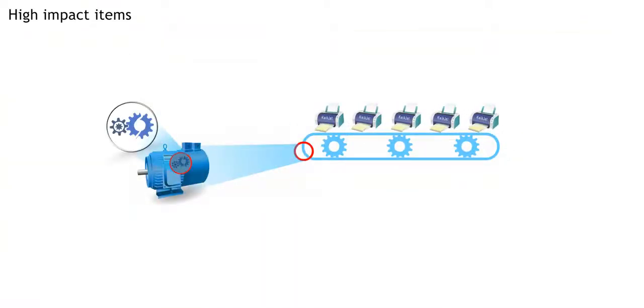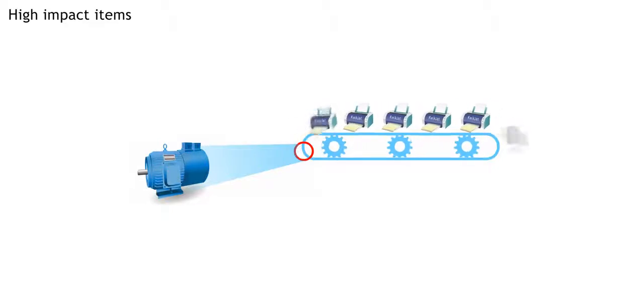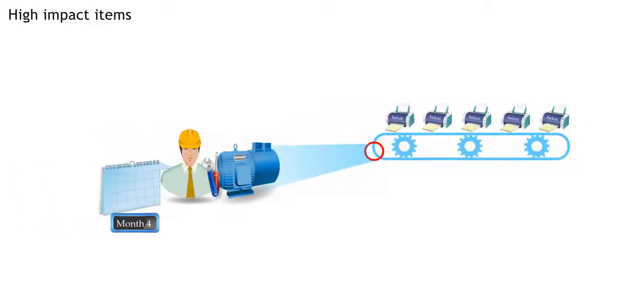But if it did break down, we couldn't produce quick jets without a replacement. Sometimes the manufacturers would take months to replace them.